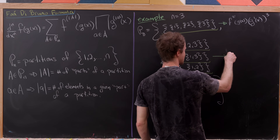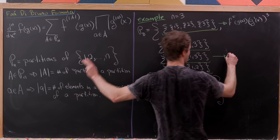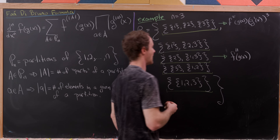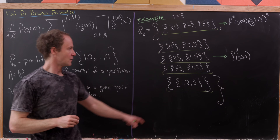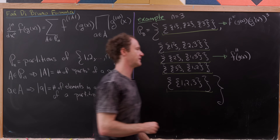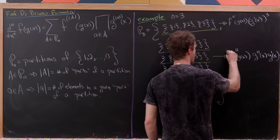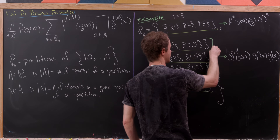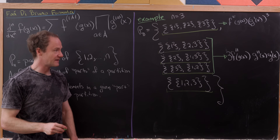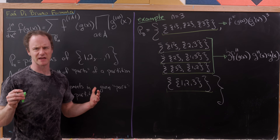Now let's look at the middle group. Each of those three partitions has two parts, so we need the second derivative of f(g(x)). Then we need a second derivative from the doubleton part and a first derivative from the singleton part, giving g″(x)·g′(x). We multiply by 3 because all three partitions in that group give the same derivative structure — the specific elements inside the parts don't matter, only how many there are.